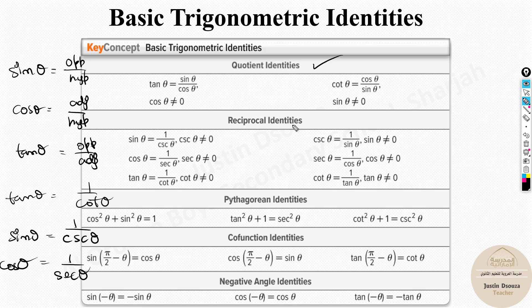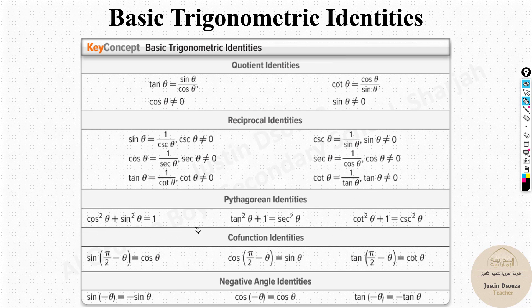Now, the Pythagorean identities. The first is: cos²θ + sin²θ = 1. The second is: tan²θ + 1 = sec²θ. And the third is: cot²θ + 1 = csc²θ. We will look at these in this lesson; the co-function and negative angle identities will be covered in the next videos.